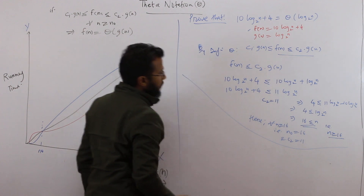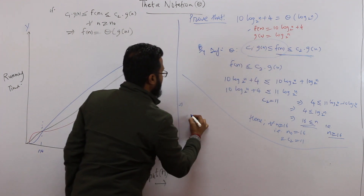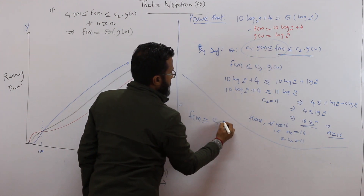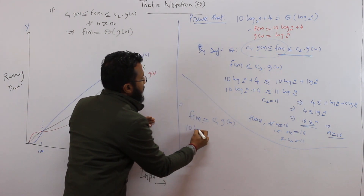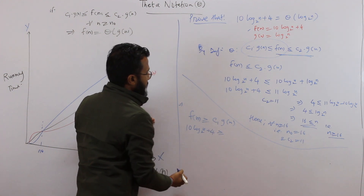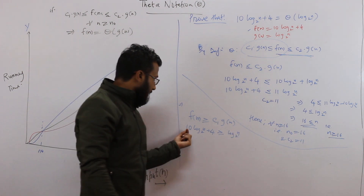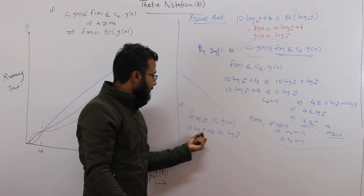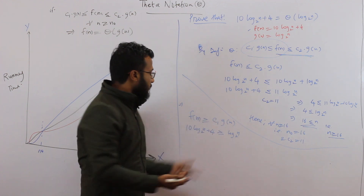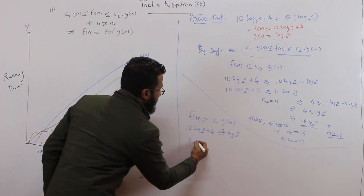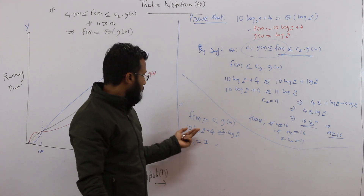Now let's prove the lower bound — that f(n) ≥ c₁·g(n). We have f(n) = 10·log₂(n) + 4, and we want to show this is always greater than or equal to log₂(n). Since f(n) is 10 times log₂(n) plus 4, the left-hand side is clearly more than the right-hand side. So c₁ = 1, and this is true for all values of n greater than 0.